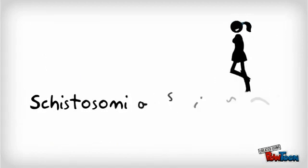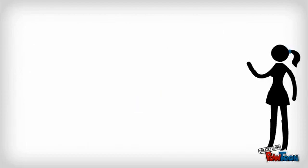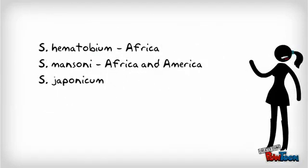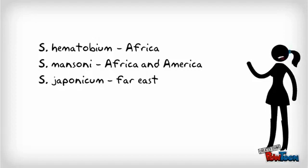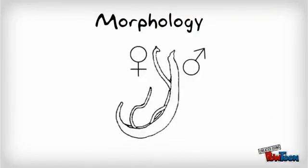For schistosomiasis, or bilharziasis, the blood fluke Schistosoma has different geographical distributions. S. hematobium is prevalent in Africa, S. mansoni in Africa and America, and S. japonicum in the Far East. Approximately 250 million people are affected and 600 million are at risk. The adult worms are 10–20mm long, with the male having an unusual lamelliform shape with marginal folds forming a canal in which the slender female worm resides. Unlike other trematodes, the schistosomes have separate sexes.